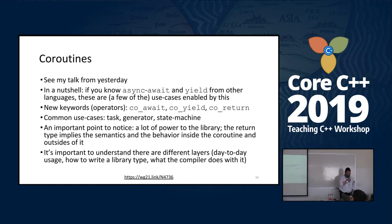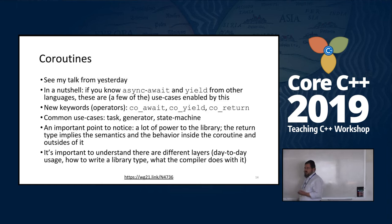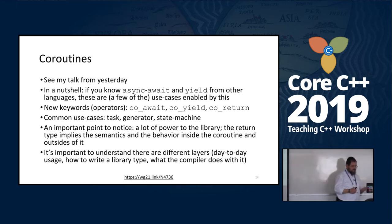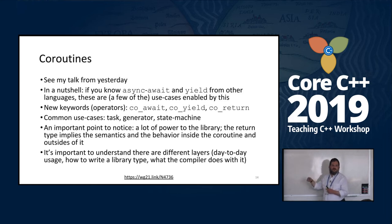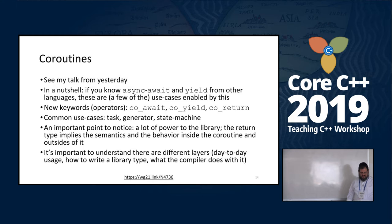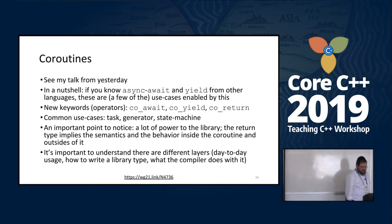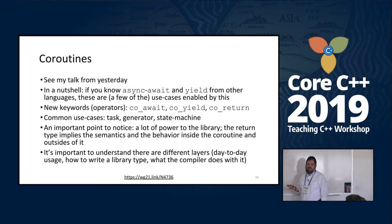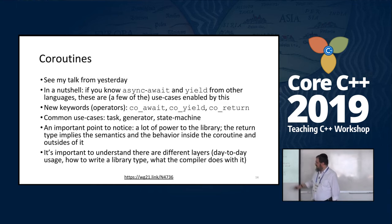We have three new operators: co-await, co-yield, co-return. By the way, this is a theme in C++20 — we have coroutines with co-await, co-yield, co-return, so 'co-' is probably a reserved prefix now. Tasks, generators, and state machines are some of the popular use cases. One important point I want all of us as teachers to note is this: the return type means a lot when we use coroutines.